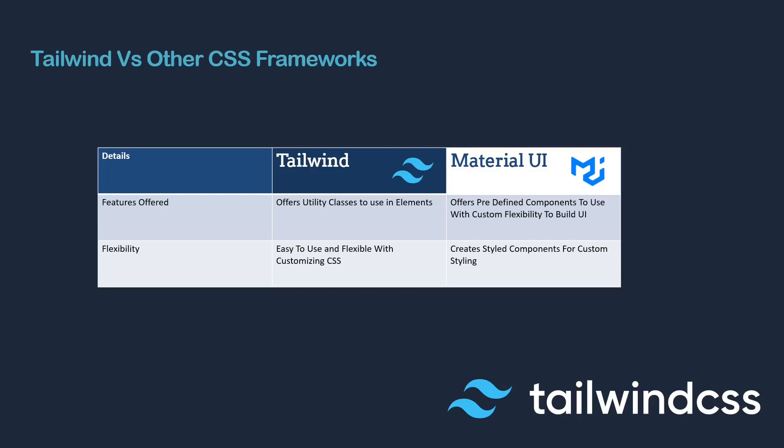With Material UI, it offers a predefined set of components with custom flexibility to build the UI. Material UI provides UI tools that save you a lot of time for building UI components. With Tailwind, on the other hand, it offers utility classes, giving you a bit more flexibility to work with CSS elements.